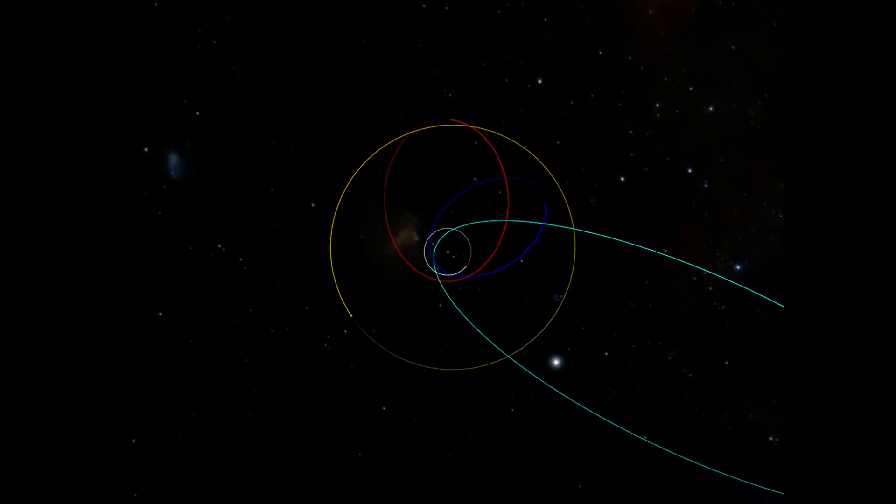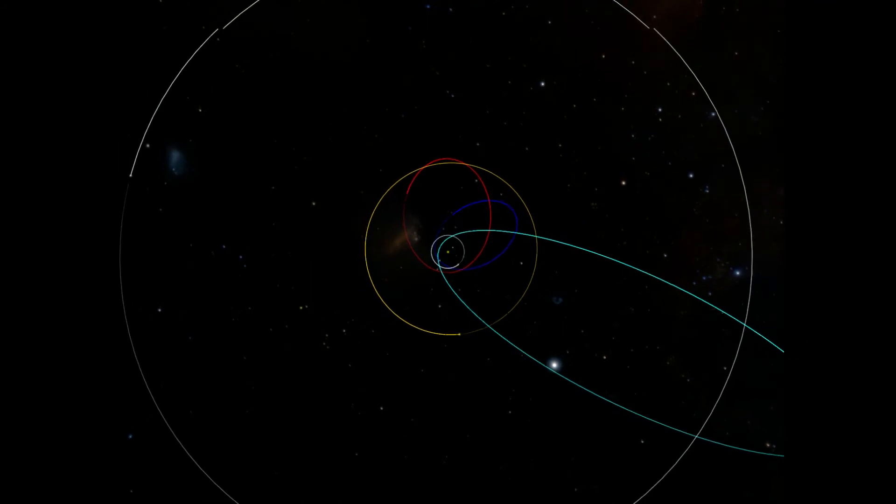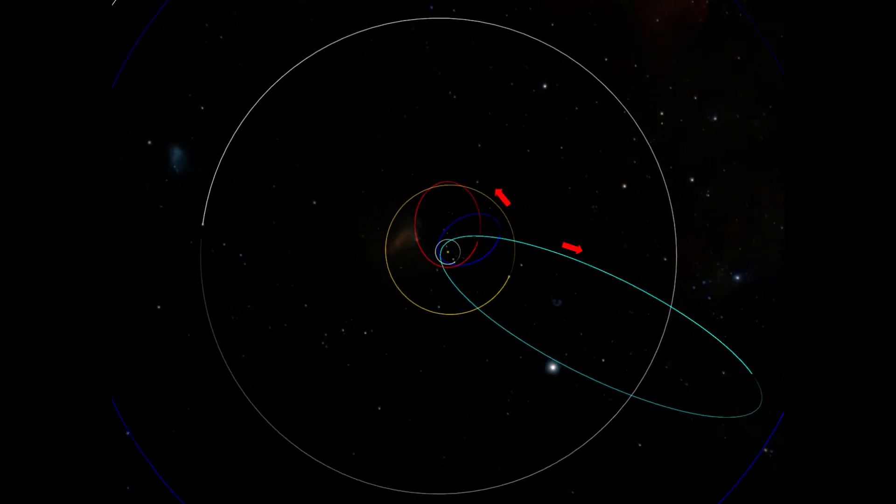Now looking at Halley's orbit, we can see some differences from these Kuiper Belt comets. First, it travels in the opposite direction. This is called a retrograde orbit.